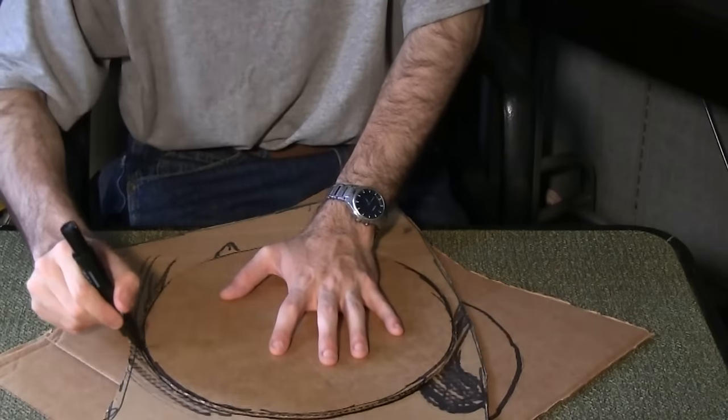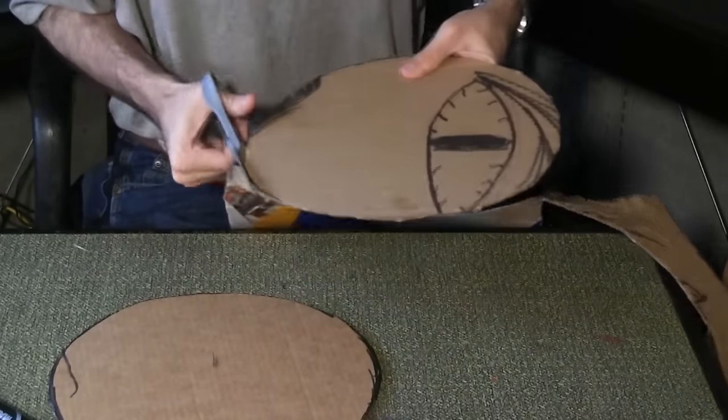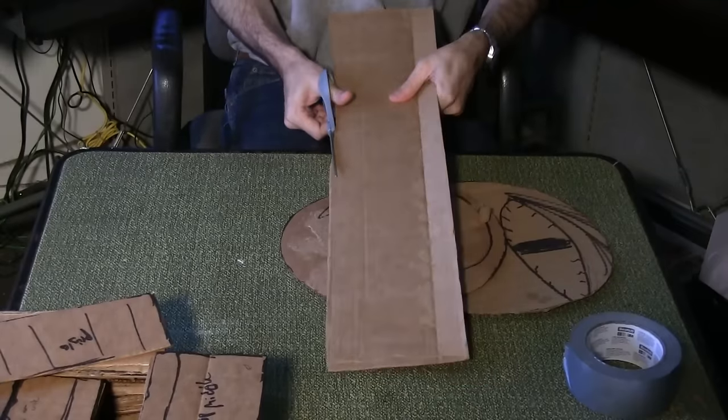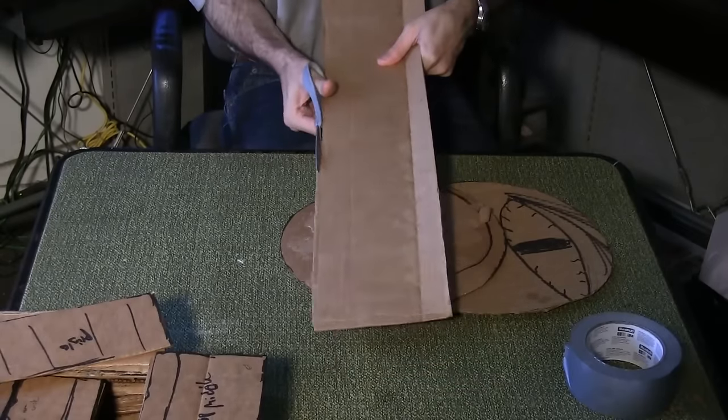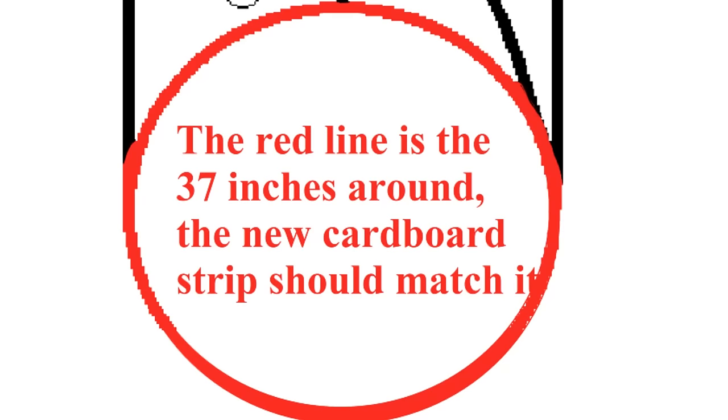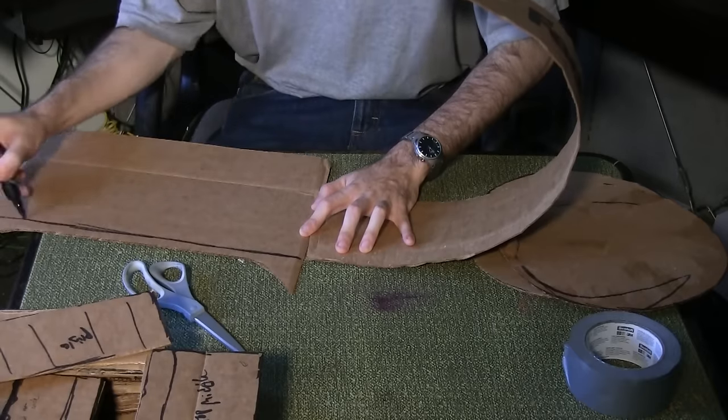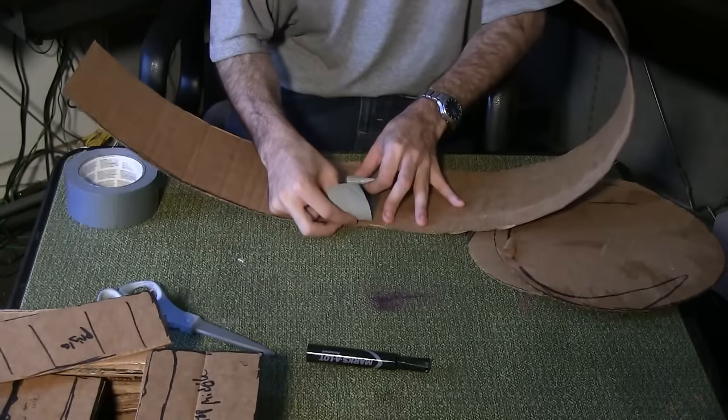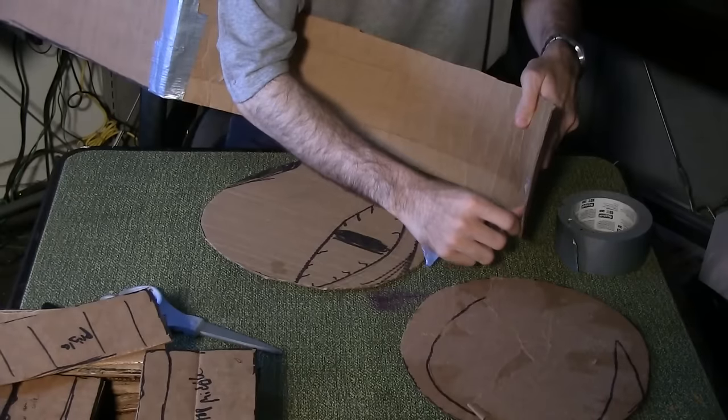Use the cutout circle from the main body to trace and cut out a second. Cut a length of cardboard to 5 inches wide and 37 inches long. It should be the same perimeter as the cutout area of the big circle on the template.